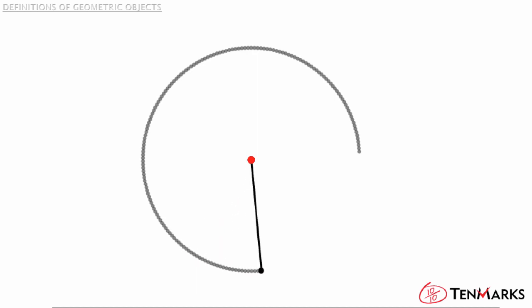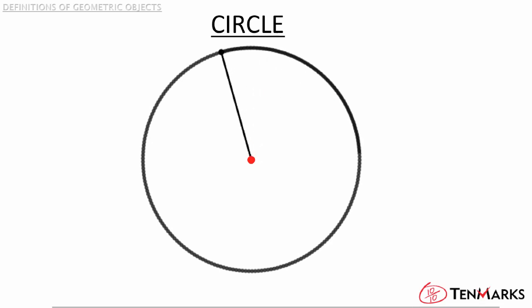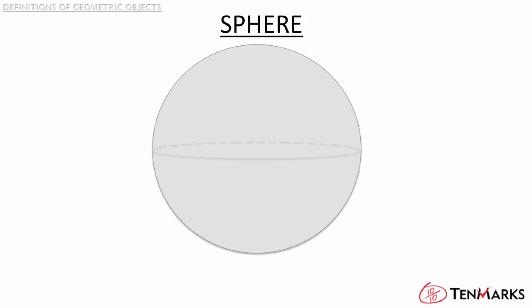If you take a point and want to find all the points equidistant to that point on a plane, what shape would you get? You would get a circle. And if the points were not restricted to a plane but could be anywhere in space as long as they are equidistant from the center point, then what would you get? You would get a sphere.